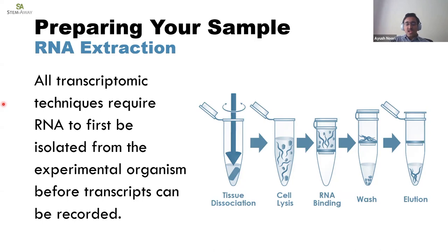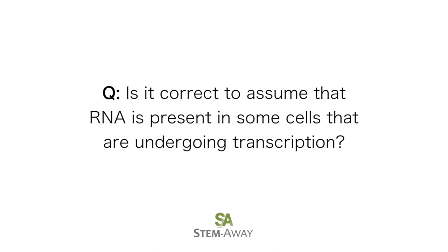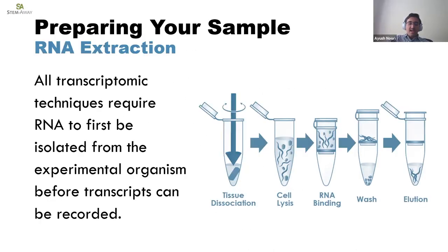There's a question: is it correct to assume RNA will be present in cells undergoing transcription? Yes — all of our cells are generally undergoing transcription at any point in time because they need to produce the proteins responsible for cellular function. How is DNA removed? DNA is removed by treating it with a DNAase, an enzyme that degrades DNA. By the end of this step, we should have our sample, which is pure RNA — the RNA sample we're interested in.